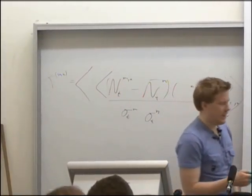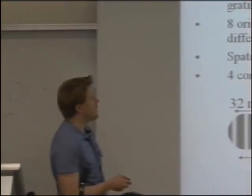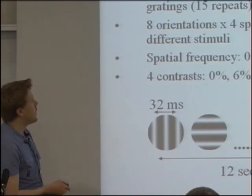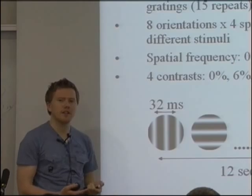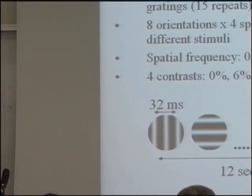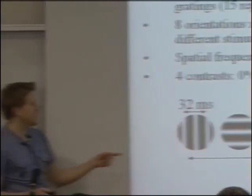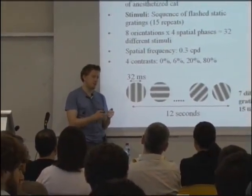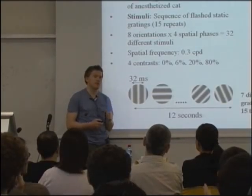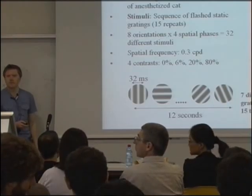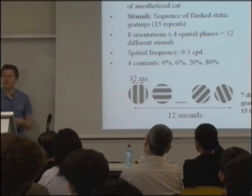Neurons are often very sharply tuned and will be silent for orientations they don't care for. When they see a preferred orientation they will spike, usually with a minimum delay of 30 milliseconds. That delay is contrast dependent: for high contrast you will have a short delay, something like 32 milliseconds, and for low contrast it will be longer. Because there are 32 stimuli, a neuron tuned for one orientation will most often be preceded by one it doesn't care for, so the response reflects just that one stimulus.